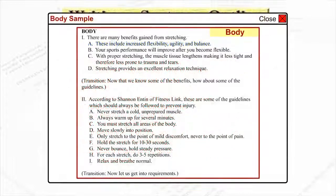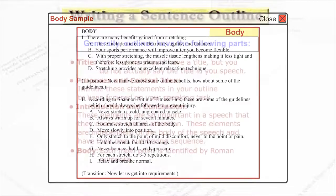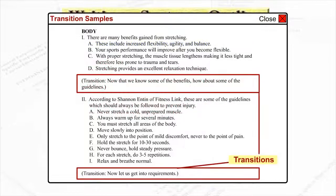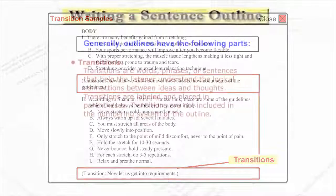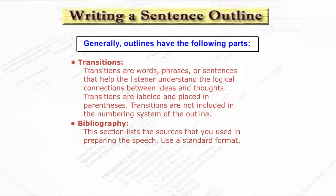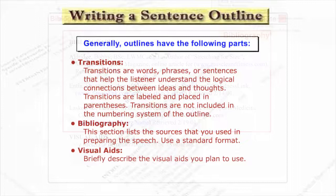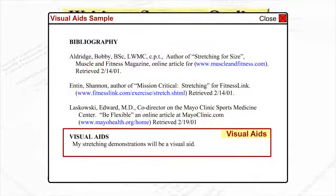Body: each main point is identified by Roman numerals. Transitions are words, phrases, or sentences that help the listener understand the logical connections between ideas and thoughts. Transitions are labeled and placed in parentheses and are not included in the numbering system of the outline. Bibliography: this section lists the sources that you used in preparing the speech — use a standard format. Visual aids: briefly describe the visual aids you plan to use.